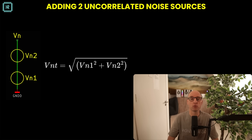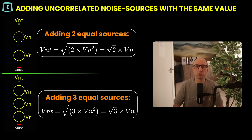You may wonder why you divide by the square root of the bandwidth and not just the bandwidth. When adding two uncorrelated noise sources, you have to square them first to get their noise power spectral density, then add them, then take the square root again — in other words, add their power. With two equal sources you multiply by the square root of two; with three sources, by the square root of three. So you multiply by the square root of the number of sources.